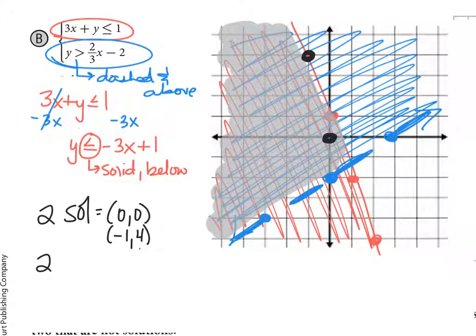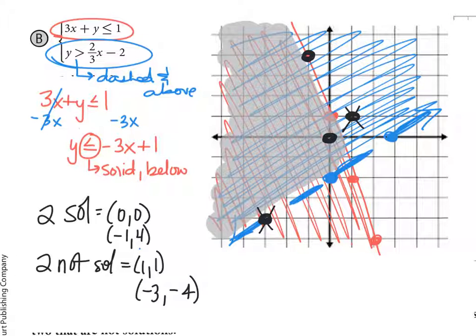And then they're going to want us to name two things that are not solutions, just so you get in the habit of seeing things that don't work. So something that is not a solution would be 1, 1 right here. It's in one of the shaded areas, but not both. So it is not a solution. Also, any of my points that are on my dashed line don't work either. So this point back here that's at negative 3, negative 4, it is not a solution either because it's on the dashed line, which is not included.